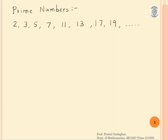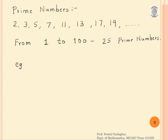These are all prime numbers. From 1 to 100, if we find all the prime numbers, there are 25 prime numbers. For example, let us see if 51 is a prime number.